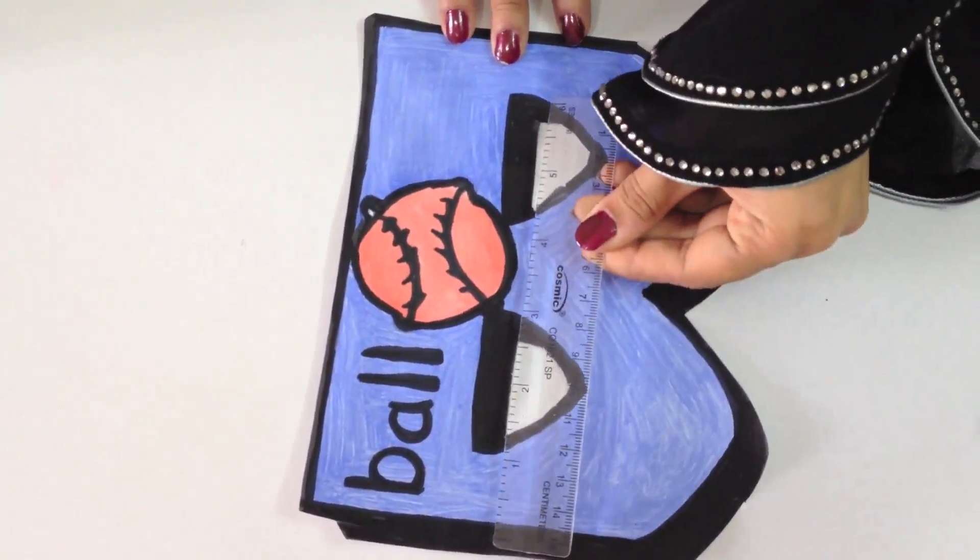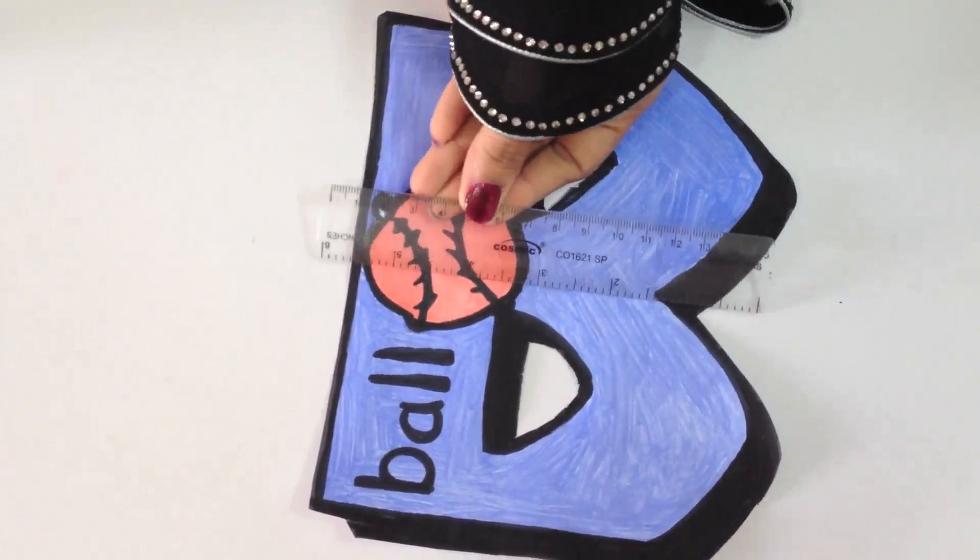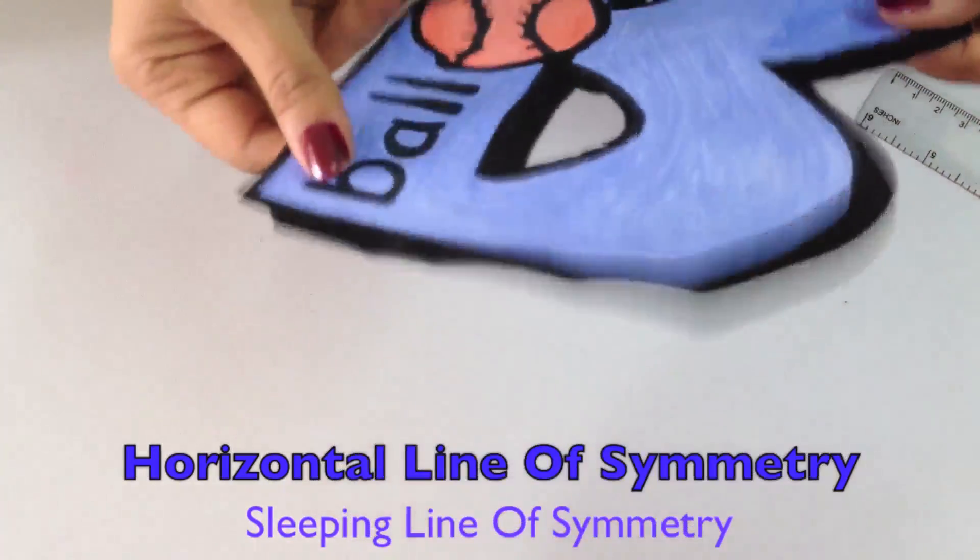It has a horizontal line of symmetry, which we can see when we fold it like this.